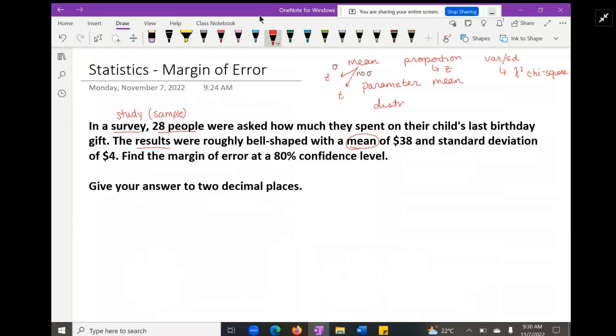It starts off saying in a survey, 28 people were asked to answer something. From that survey, let's call it a study, which we tend to use a sample for most of the time. You can have a study that is using the entire population - that's definitely possible, and then you can call it a standard deviation sigma for the population. But in this case, this is sounding like a sample.